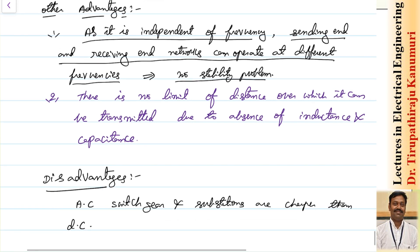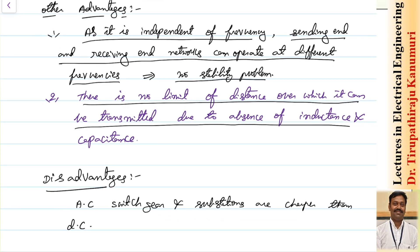The second advantage is there is no limit on the distance over which power can be transmitted, due to the absence of inductance and capacitance. In the case of AC, power that can be transmitted equals V₁V₂/X × sin δ, where V₁ is sending-end voltage, V₂ is receiving-end voltage, δ is the angle between them, and X is the line reactance. In the case of DC, all these problems are absent — the reactance concept is not there — so it can be transmitted over huge distances.